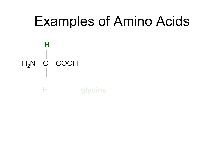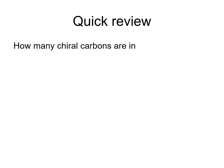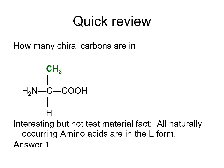The simplest amino acid is glycine, where the side chain is simply a hydrogen — it is the only amino acid that is not chiral, because it has two hydrogens on the central carbon. Another simple amino acid is alanine, where the R group is a methyl group (CH3). Alanine has one chiral carbon — the central carbon attached to four different things. All naturally occurring amino acids are in the L form.